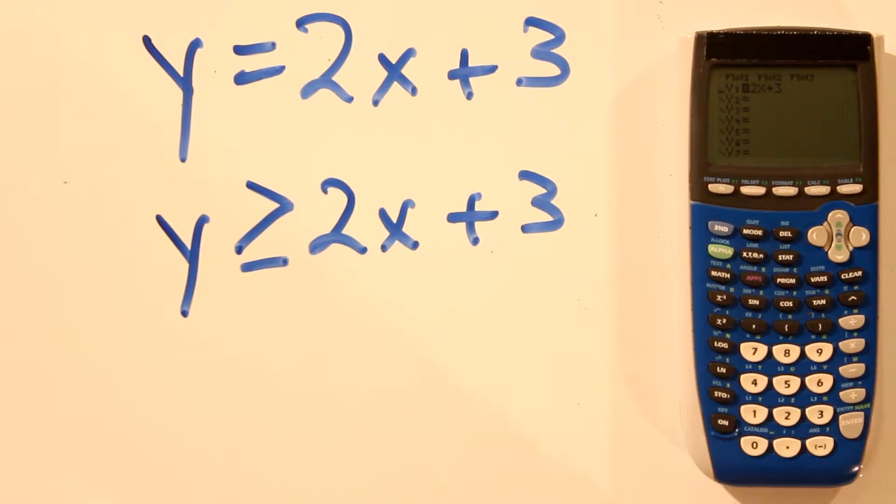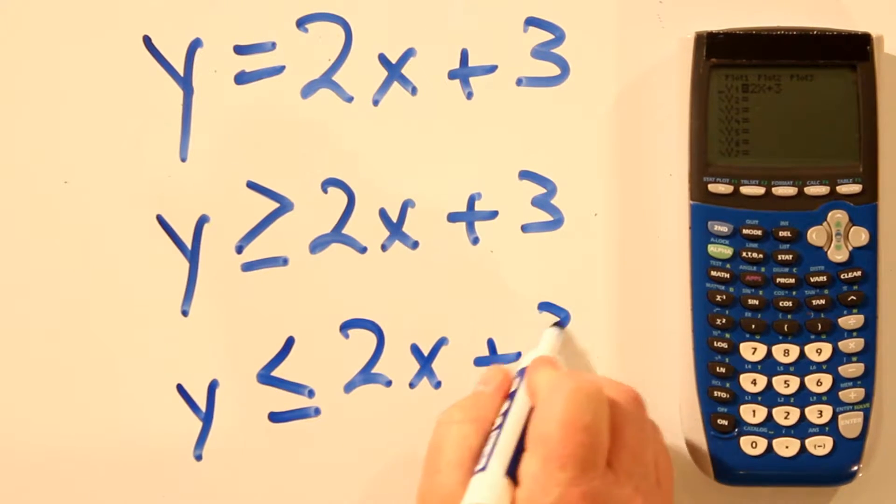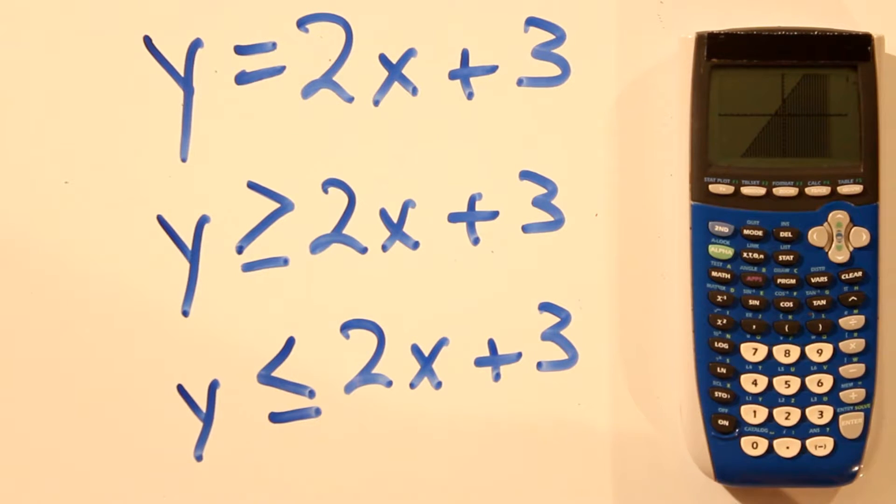And if we go over and hit enter again, it's kind of down and to the left. This time we're going to get y less than or equal to 2x plus 3. And it shades below the line.